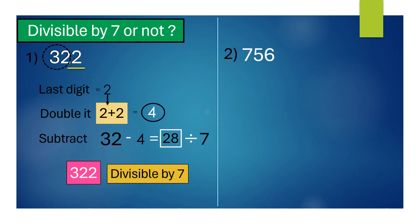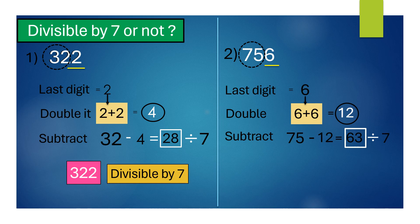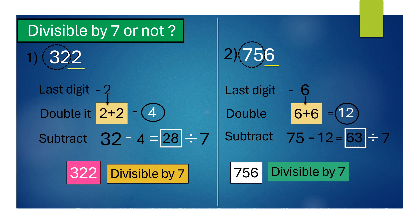For 756, the last digit is 6. Double it — we get 12. Now subtract 12 from 75. We get 63, which is divisible by 7. Therefore, the given number 756 is also divisible by 7.